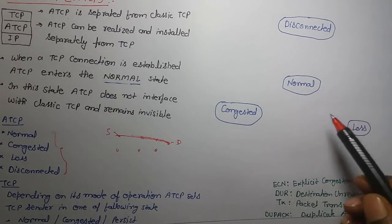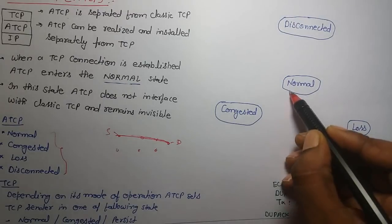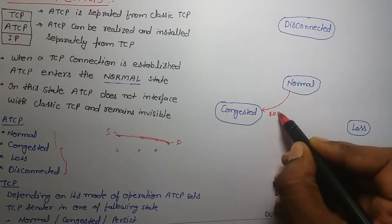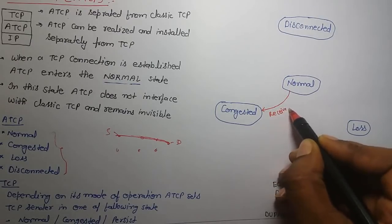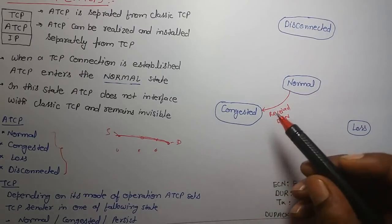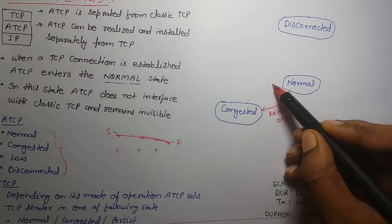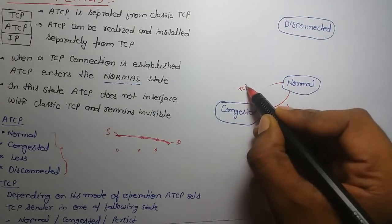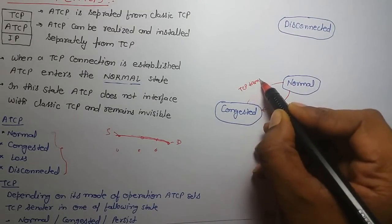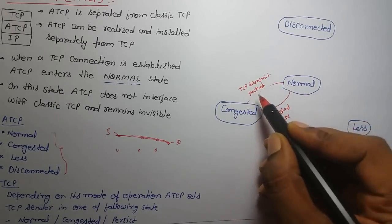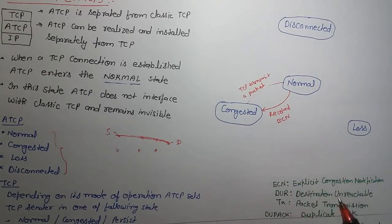This is the normal state. If ATCP has received ECN, then it will move to congested mode. ECN is received, and if it is in congested mode, TCP will transmit a packet. After TCP transmits the packet, it will move back to normal state.